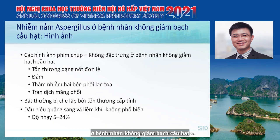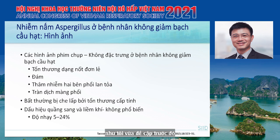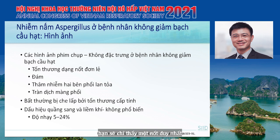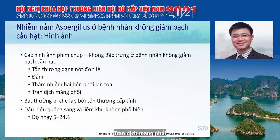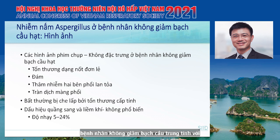Suggestive lesions on chest CT for invasive aspergillosis include the ground-glass halo sign, crescent sign, nodule, or cavity. However, none of these is 100% specific for aspergillosis. In non-neutropenic patients, the imaging may not be specific—you may see only a single nodular lesion, masses, bilateral infiltrates, or effusion, and the halo and crescent signs have sensitivity of only 5 to 24%.